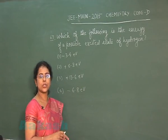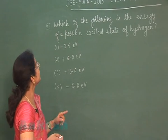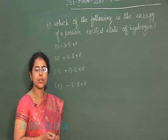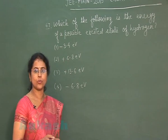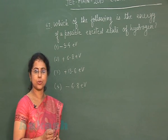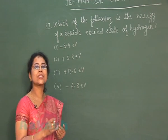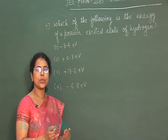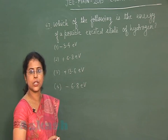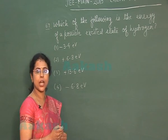Next question is question number 67: Which of the following is the energy of a possible excited state of hydrogen? Hydrogen is the simplest atom in the universe, having only one electron. The different orbits of hydrogen represent excited states — the ground state is the first orbit, and all other orbits are considered excited states.